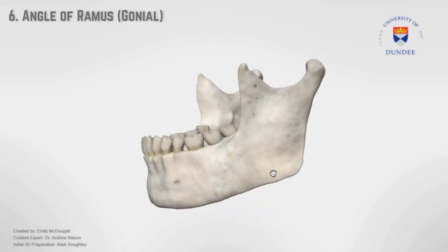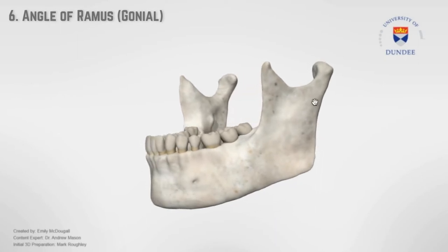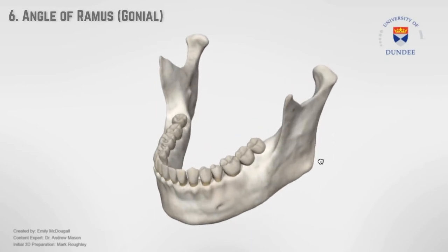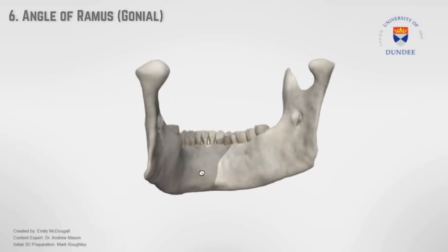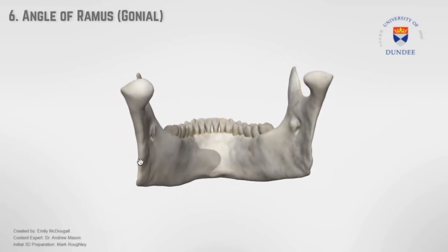Angle of ramus, also known as the gonial angle — this is where the inferior border of the ascending ramus meets the base of the mandibular body at an obtuse angle. This area provides attachment for the masseter on the outside and medial pterygoid on the medial surface, and the stylomandibular ligament posteriorly.